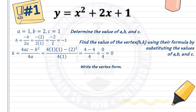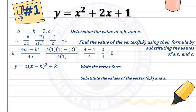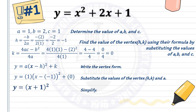Next, write the vertex form: y equals a times quantity x minus h squared plus k. Substituting the values, y equals 1 times quantity x minus negative 1 squared plus 0. Simplifying, the vertex form is y equals quantity x plus 1 squared.